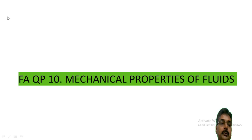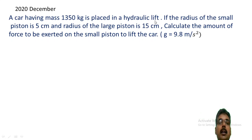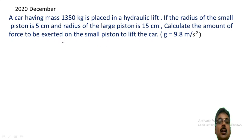Christian Vapor Revision, Chapter 10: Mechanical Properties of Fluids. A car having mass of 1350 kg is placed in a hydraulic lift. If the radius of the small piston is 5 cm and the radius of the large piston is 15 cm, we can calculate the amount of force to be exerted on the small piston to lift the car.